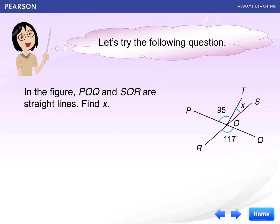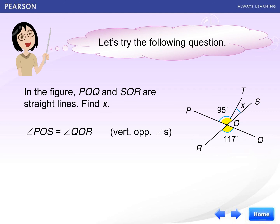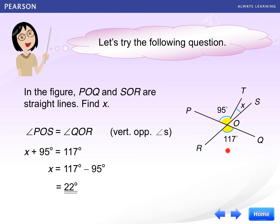Let's try to solve a problem using what we have learned. First, angle POS equals angle QOR, because of vertically opposite angles. Then, X plus 95 degrees is angle POS, and angle QOR equals 117 degrees. So X plus 95 degrees equals 117 degrees, and therefore X is 22 degrees in this case.